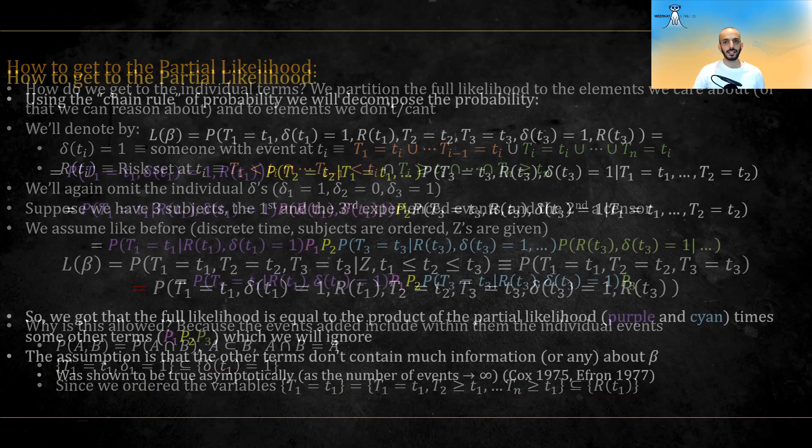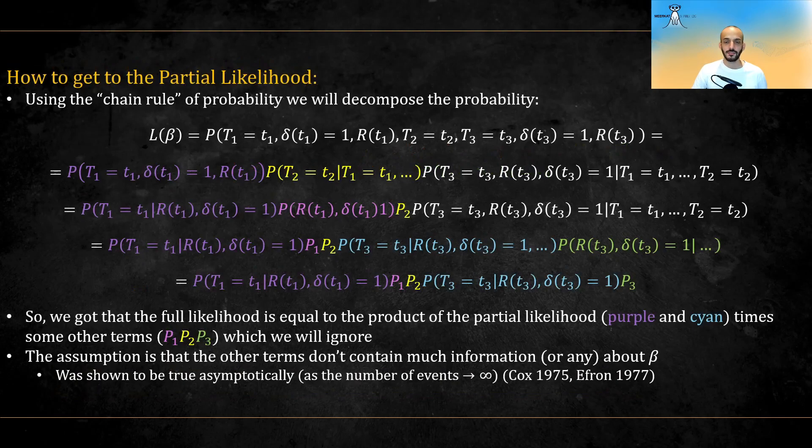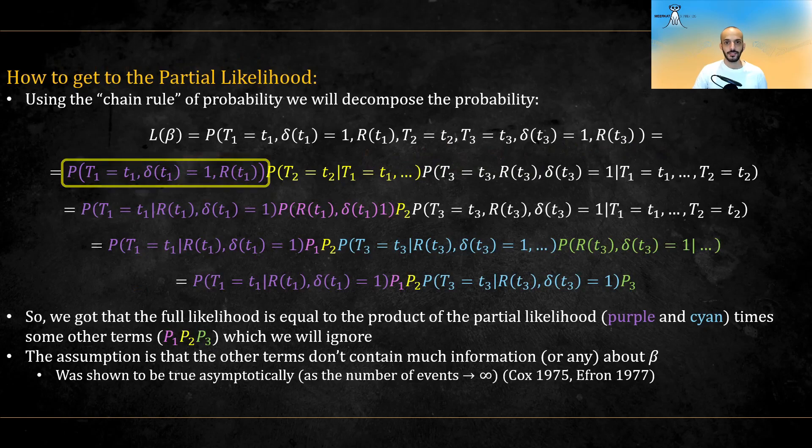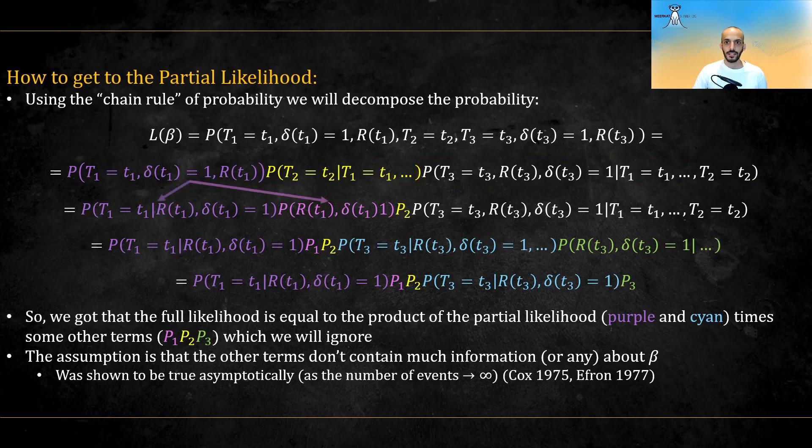Using the chain rule of probability, we will decompose the probability as follows, the events related to t1 times t2 given t1 times t3 given t1 and t2. We will further decompose the joint of t1 as follows.